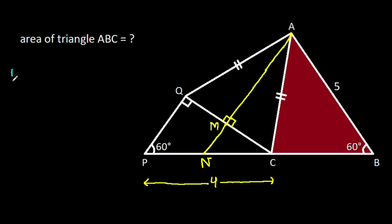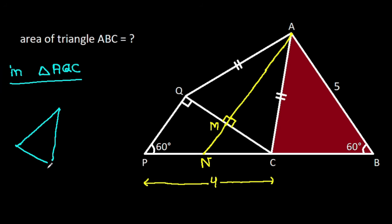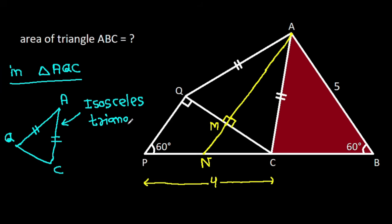In triangle AQC, we have AQ is equal to AC, that means it will be isosceles. So from point A, if we make a perpendicular on CQ and this point is M, then CM will be equal to QM. Suppose CM equals QM equals A.